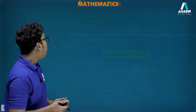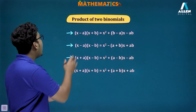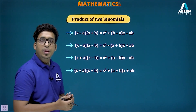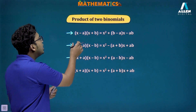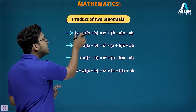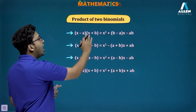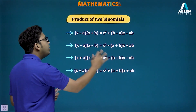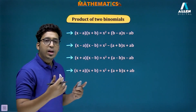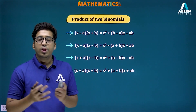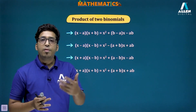Now we'll try to understand the product of two binomials. For (x-a)(x+b), this is just normal multiplication — we multiply each and every term present inside one bracket by each and every term in the other bracket. We don't really have to memorize this identity; we just have to perform multiplication, and with good command on multiplication we will get this result very efficiently and speedily.